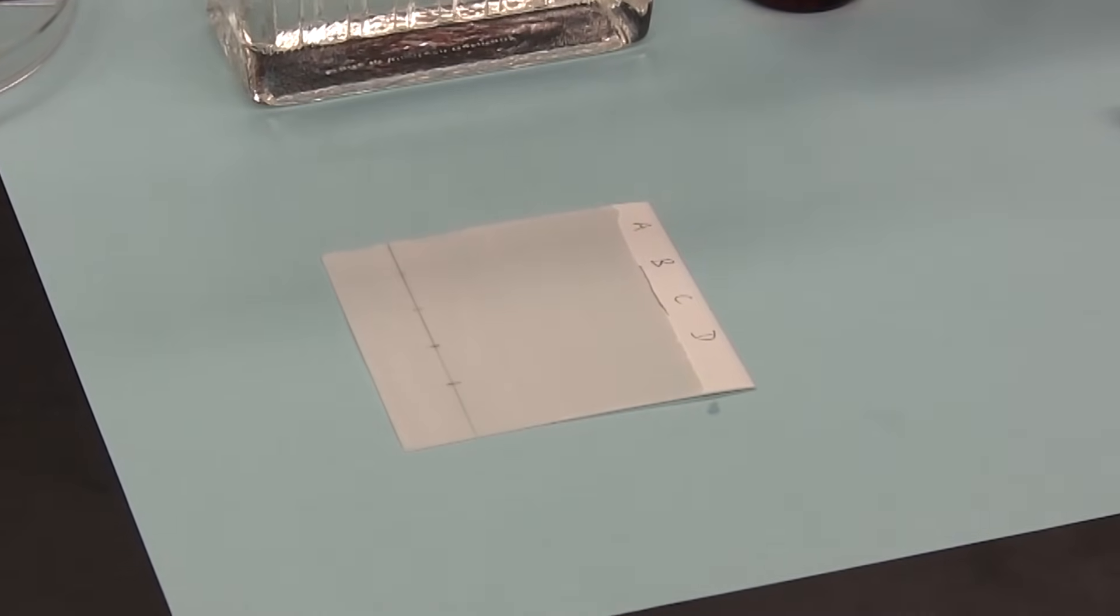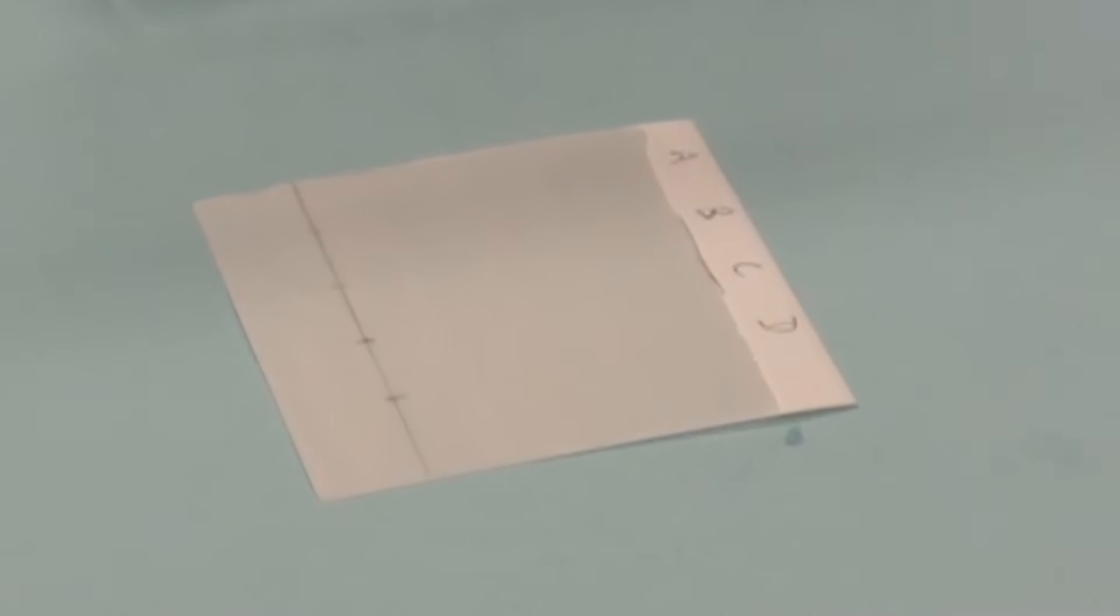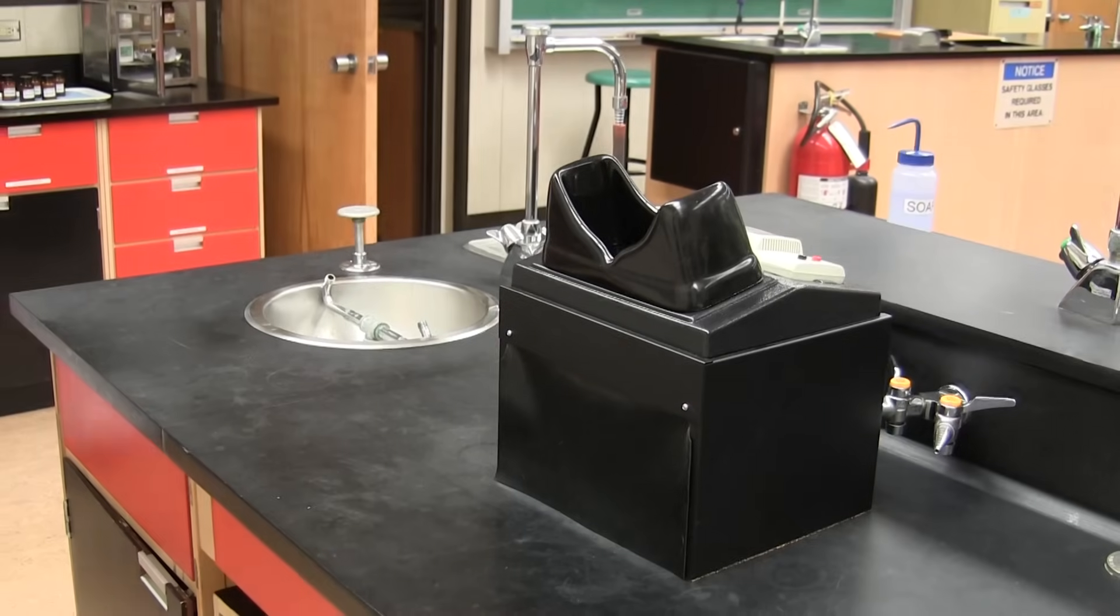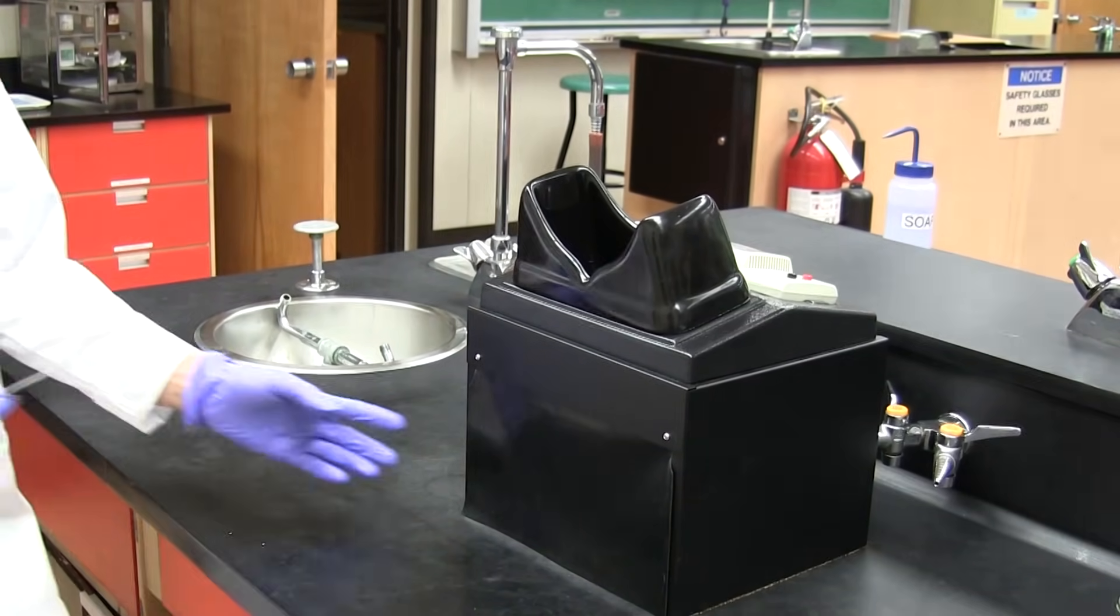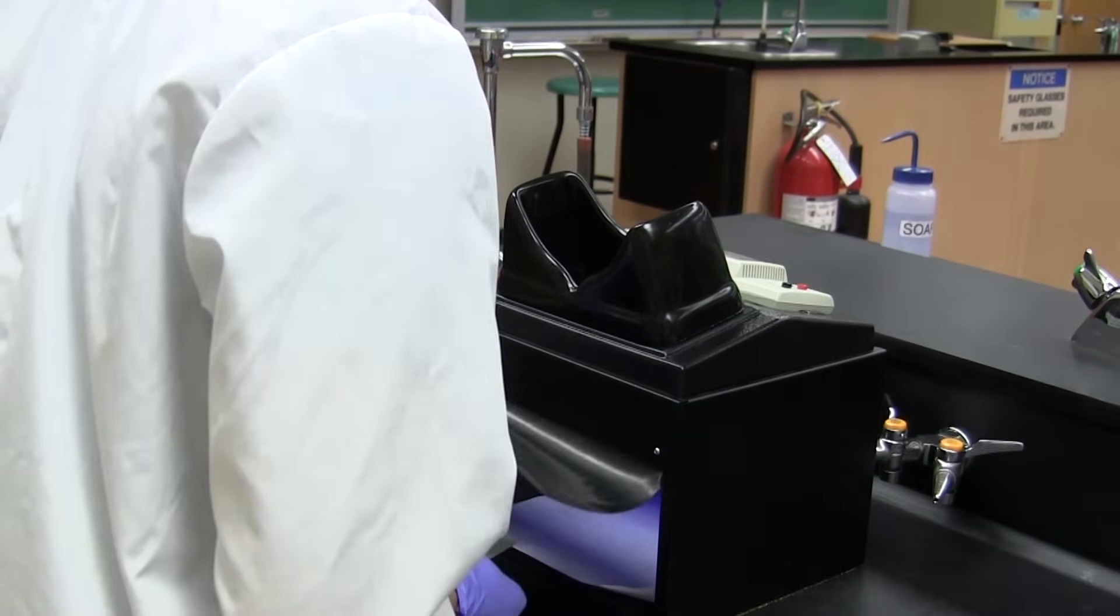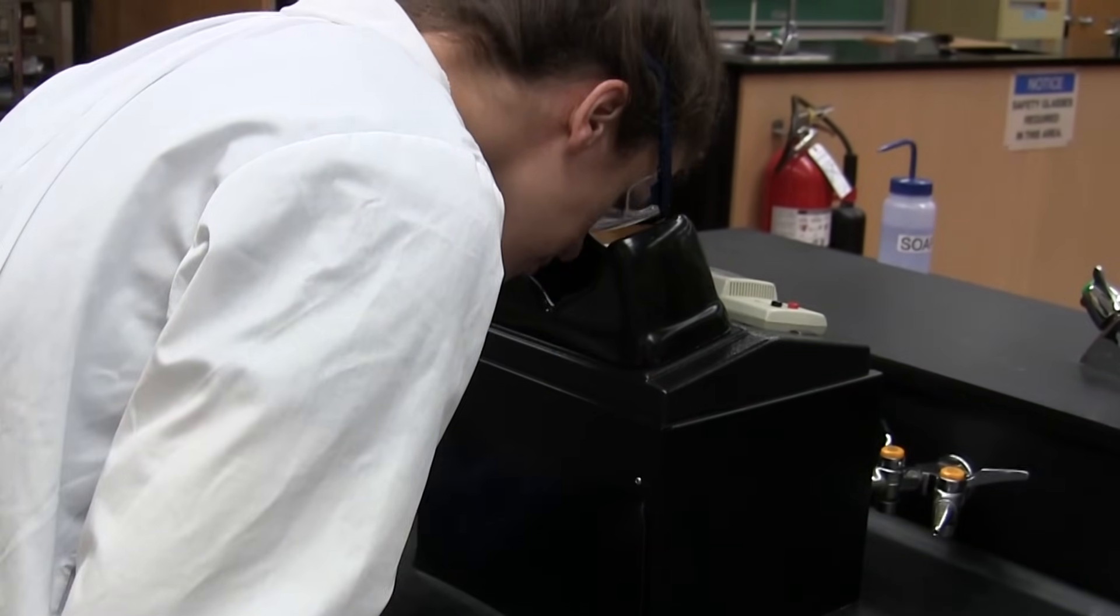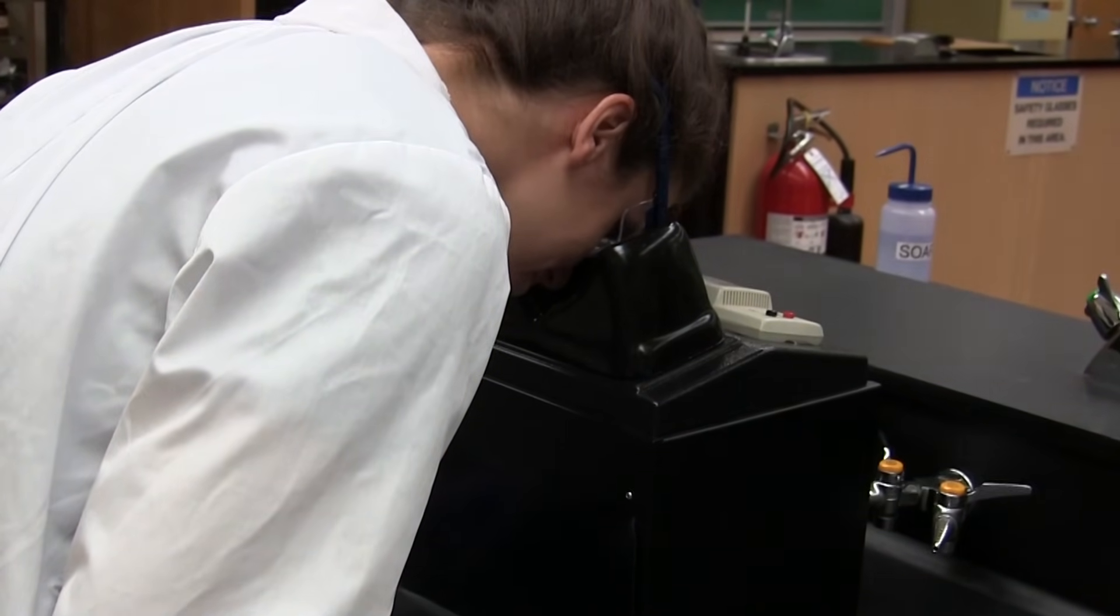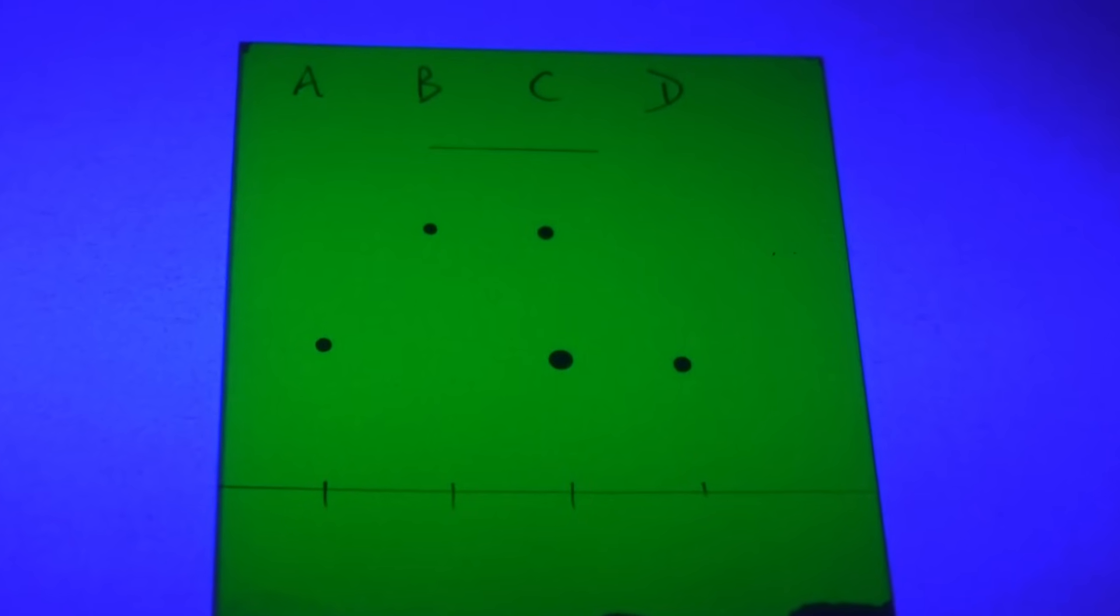There are a number of ways to see or as we say visualize developed TLC plates. A common method is to place the developed plate underneath an ultraviolet or UV light source. This method of visualization is by far the most common in your lab. If a fluorescent indicator is added to the silica, the silica will fluoresce under UV light.